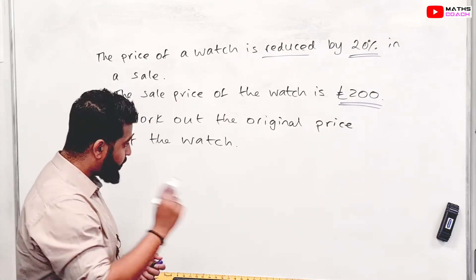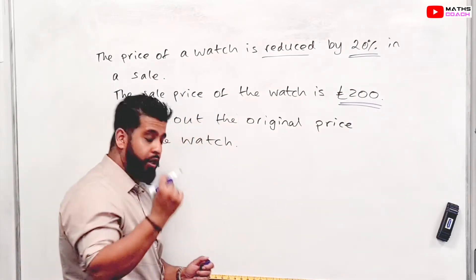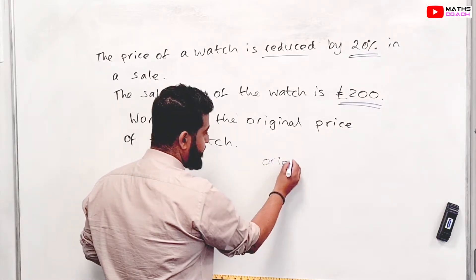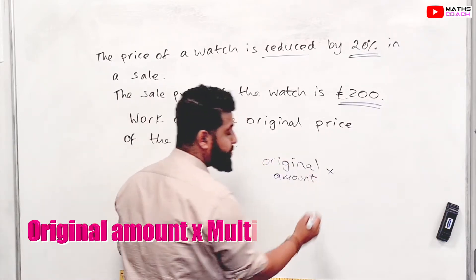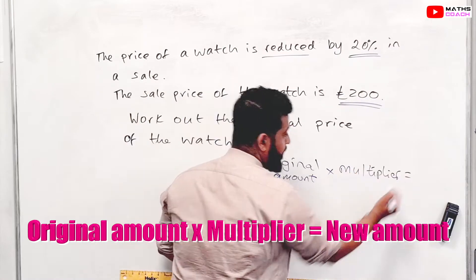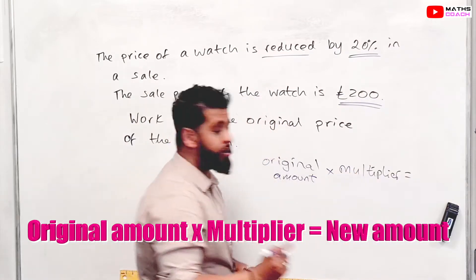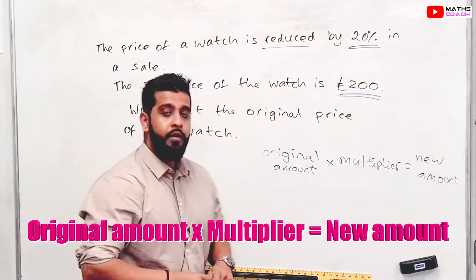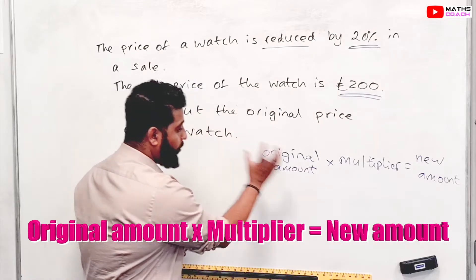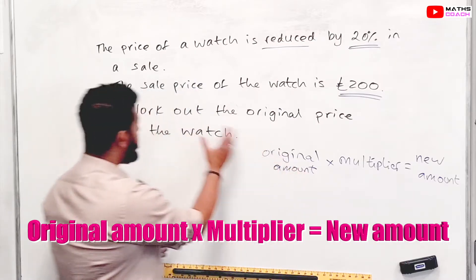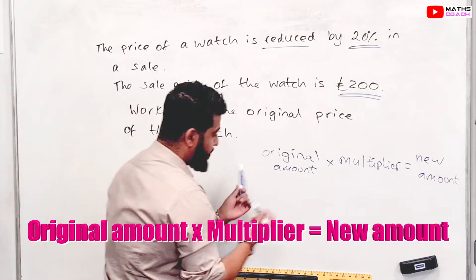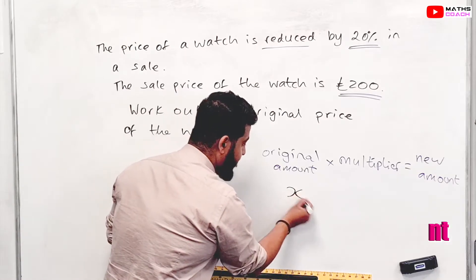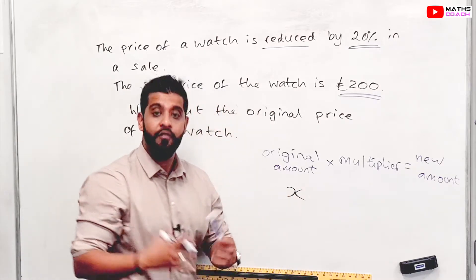The original price is the price that the watch cost before it was reduced. There's a formula I like to use — write this down: original amount times by the multiplier equals the new amount. The original amount is what we are trying to work out, the original price. Because we don't know the original price, we can just write an X for an unknown.